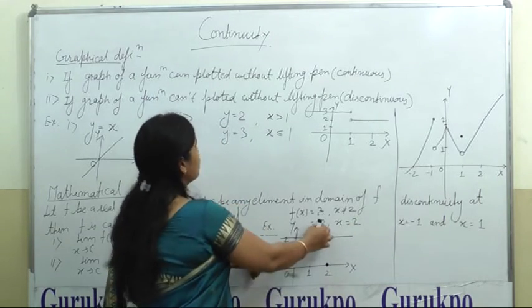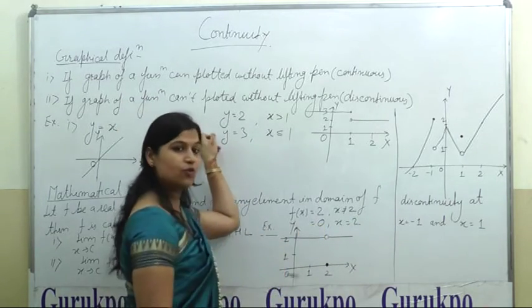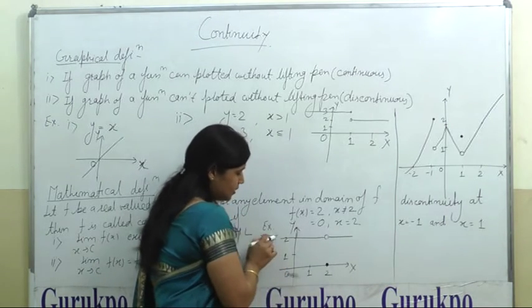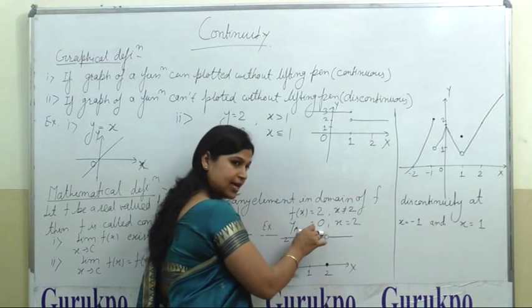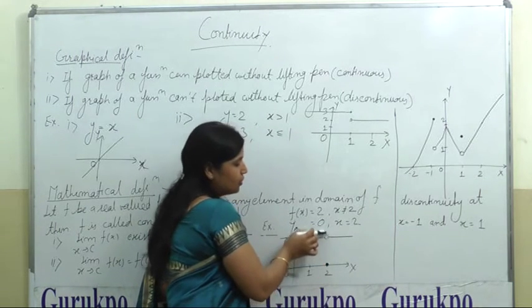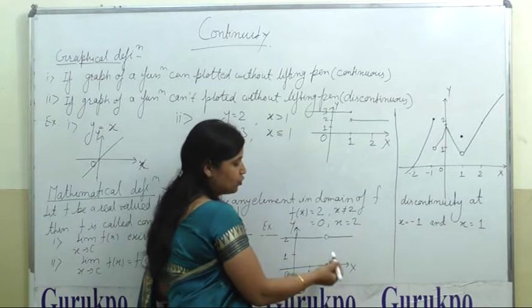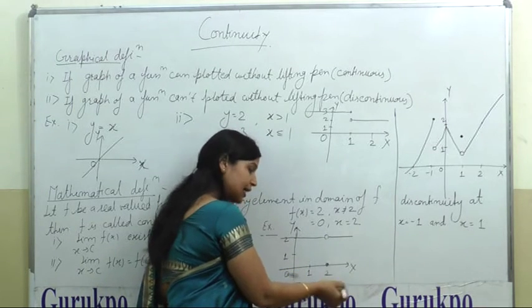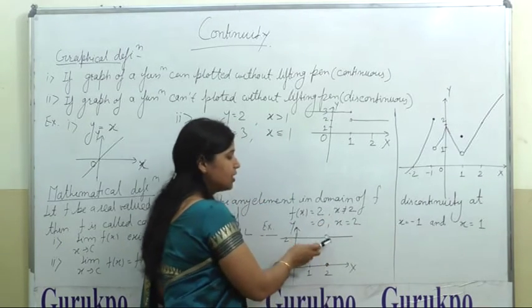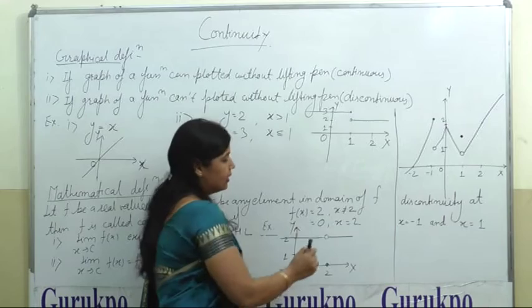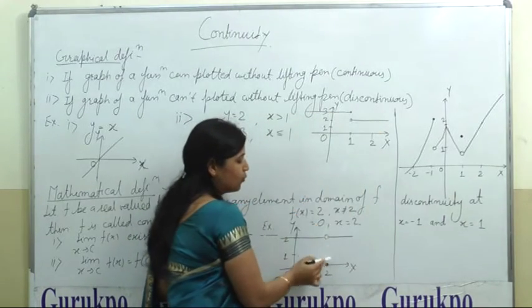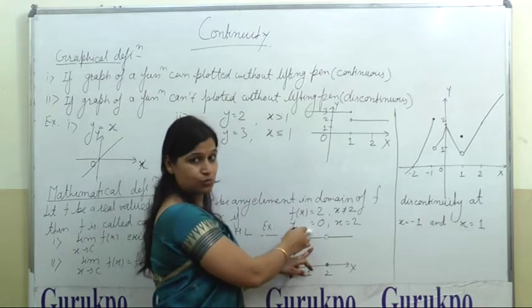You can understand it with the help of the graphical method also. When you draw this graph, it is not continuous — at this point you have to lift your pen, come to this point, and again lift your pen, then continue. That means the function is discontinuous and the point of discontinuity is x equals 2.